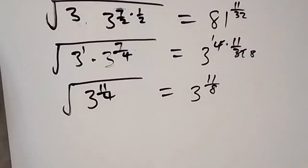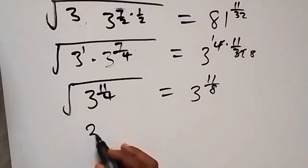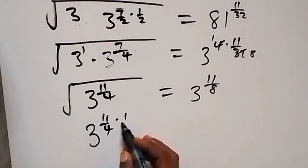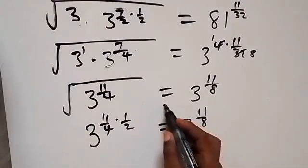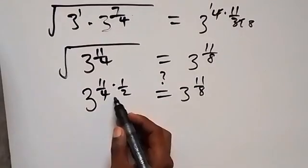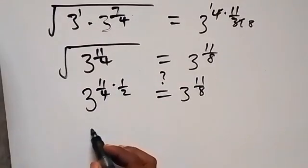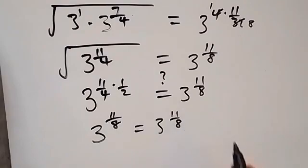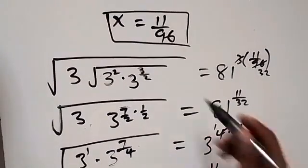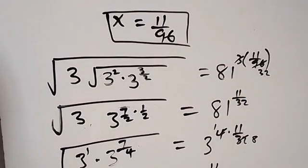This root can be written as raised to power half, so 3 raised to power 11 over 4 times half equals 3 raised to power 11 over 8. Multiplying confirms: 3 raised to power 11 over 8 equals 3 raised to power 11 over 8. The left and right sides are equal, therefore the value of x is 11 over 96. Thank you for watching — subscribe and give me a thumbs up. See you in the next class, bye for now.